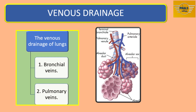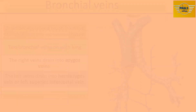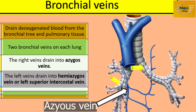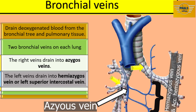For venous drainage, just like in the arterial supply, venous blood from the lungs is drained by two sets of veins: the bronchial veins and the pulmonary veins. The bronchial veins drain deoxygenated blood from the proximal bronchial tree and pulmonary tissue. There are two bronchial veins on each side. The right bronchial veins drain into the azygos vein, while the left bronchial veins drain into the hemiazygos vein or the left superior intercostal vein.